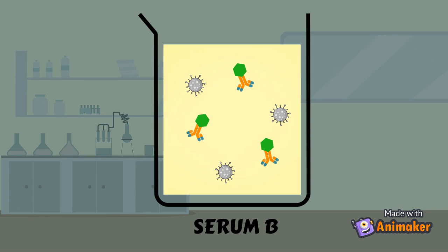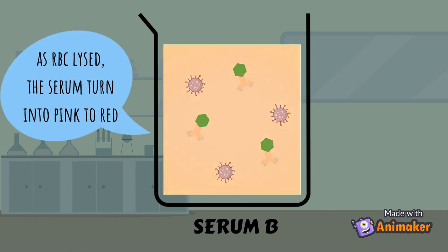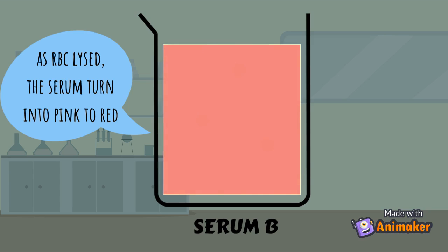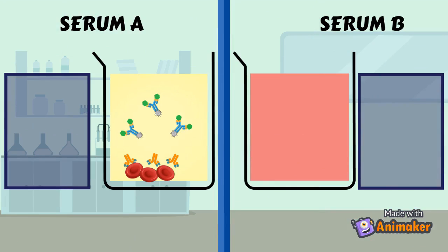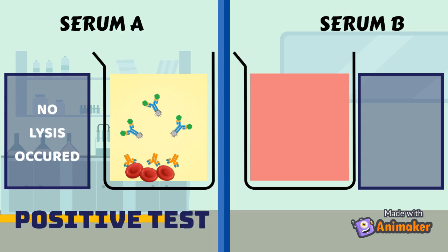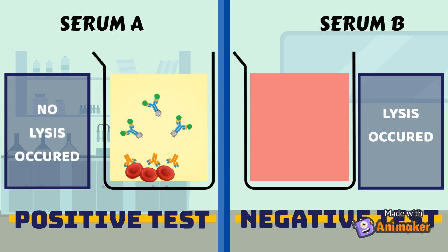The complements will induce the lysis of the red blood cells. As the red blood cells lyse, the serum will turn pink to red in color. Looking at serum A, no lysis occurring tells us there are antibodies in the serum — the CFT result is positive. While for serum B, lysis of sheep red blood cells indicates a lack of antibodies in the serum — the CFT result is negative.